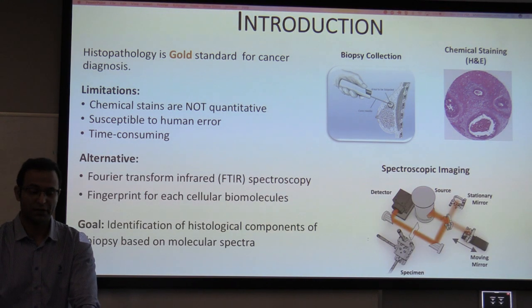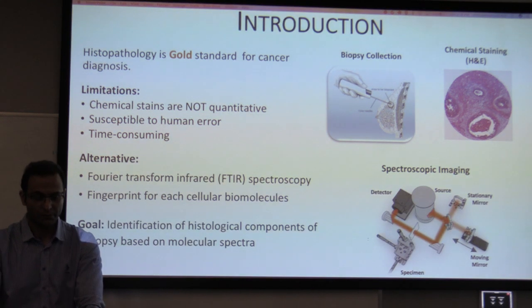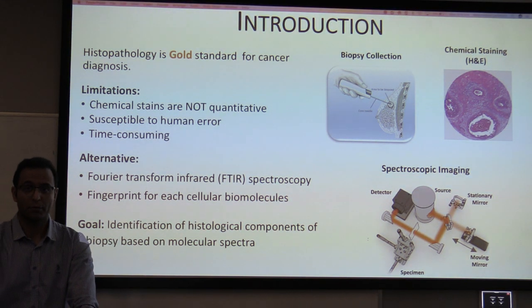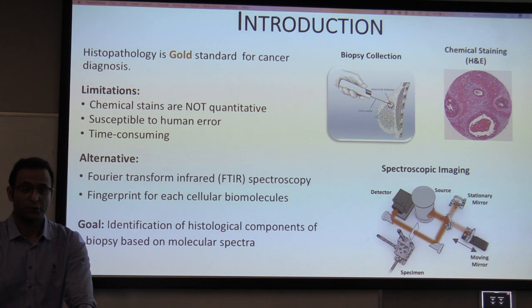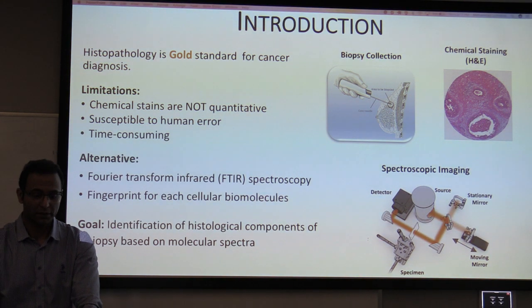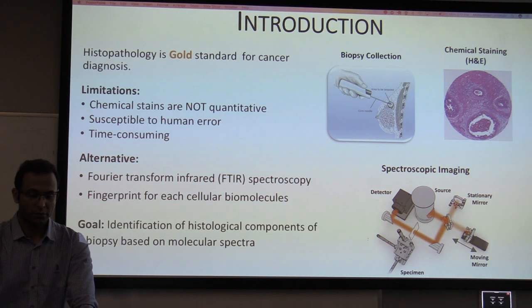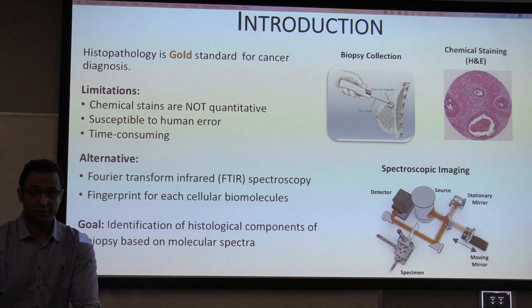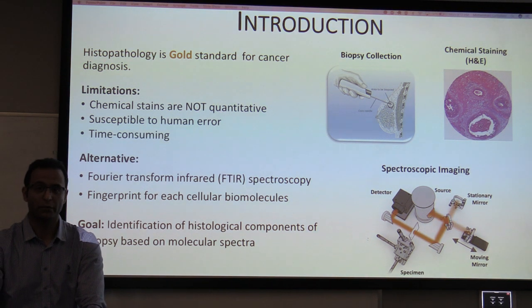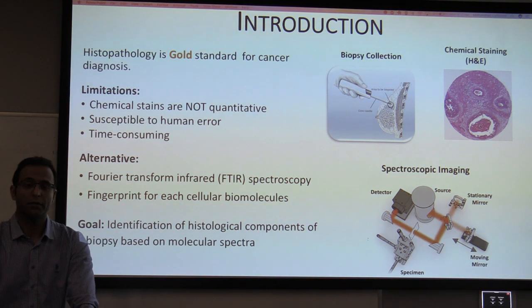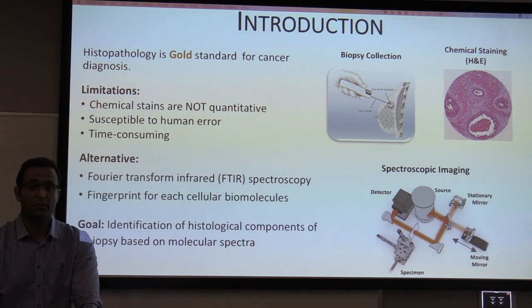The other approach is using FDR images, where the absorption spectrum for each component provides a fingerprint for that component. So the goal of this project is to identify histological components of a biopsy based on nuclear spectra. In simpler language, I am trying to identify the parts of the tissue that can be used by pathologists to identify the cancer.